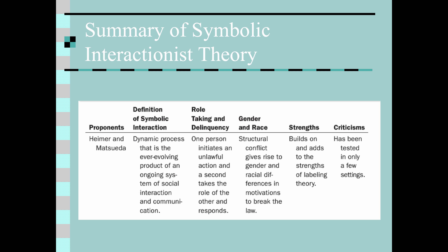Ross Matsueda and Karen Hymer used the symbolic interactionist perspective in the 1990s to develop theory. It proposes to explain delinquent behavior in terms of self-development mediated by language, which is the central medium through which symbolic interaction occurs. They advanced the basic premise of symbolic interaction, stating that social order was a dynamic process — the ever-evolving product of an ongoing system of social interaction and communication.